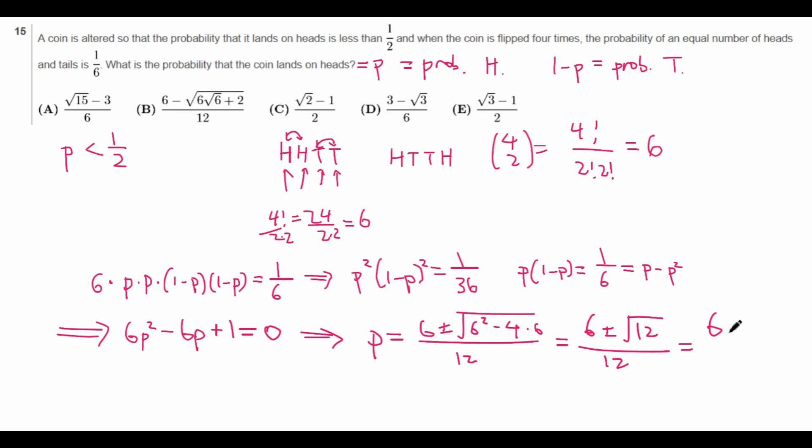And if we take out a 4 out of the root 12, we get 6 plus or minus 2 root 3 over 12, which simplifies as 3 plus or minus root 3 over 6.